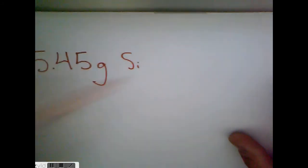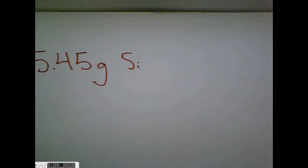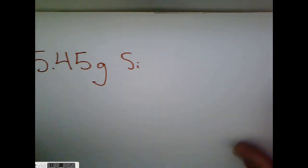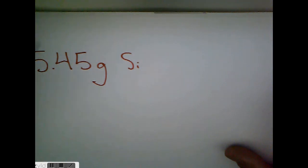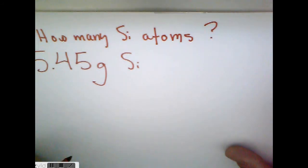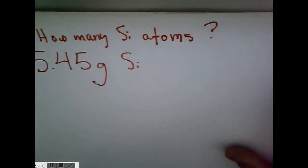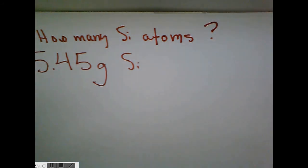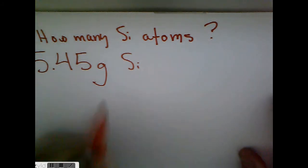So we have 5.4 grams of silicon. This sample is basically a whole pile of silicon atoms — we're just reviewing what we did yesterday. Right now, we want to figure out how many silicon atoms we have. Our goal is: how many silicon atoms? Somehow, we have to go from the mass of the sample to how many atoms. Same thing with the M&Ms — you have your pile of M&Ms, you have a weight, so you divide by the weight of one M&M. Same thing: we're going to divide by the weight of one atom.